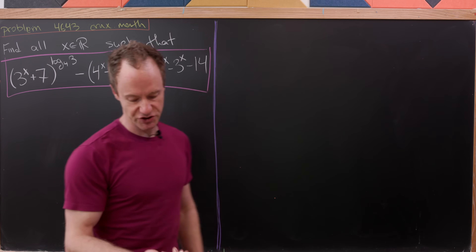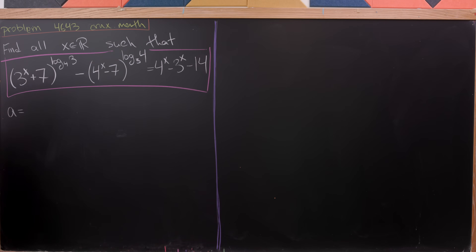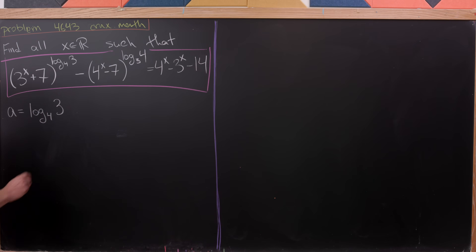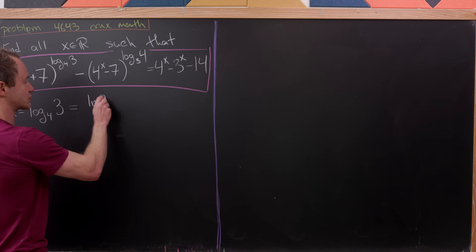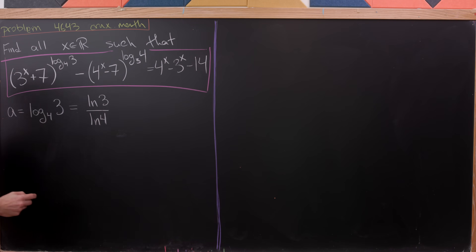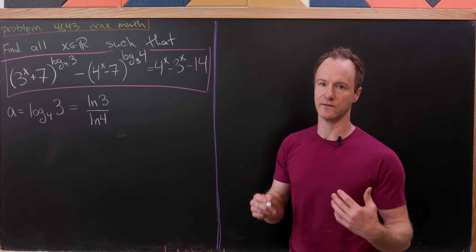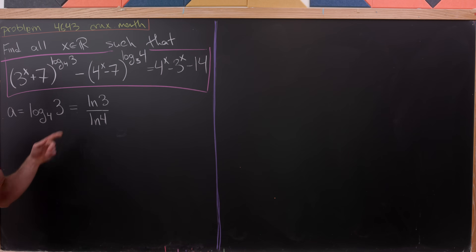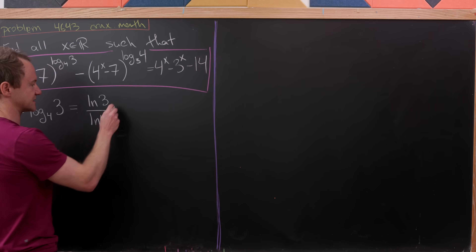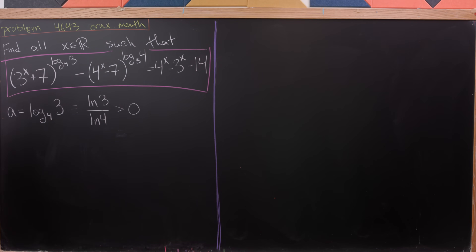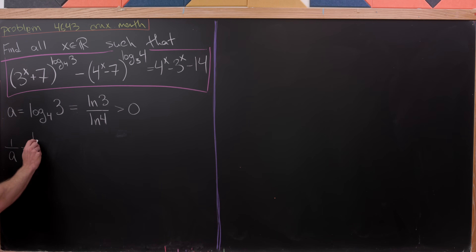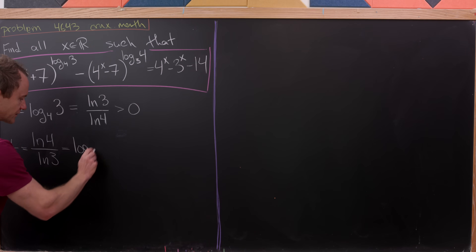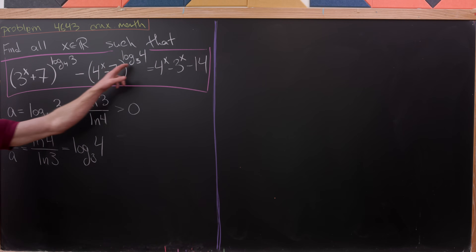Let's start by introducing some notation. Let lowercase a be equal to the log base 4 of 3. By the change of base formula I can write that as the natural log of 3 over the natural log of 4. Now both 3 and 4 are bigger than e, meaning the natural log of 3 is positive and the natural log of 4 is also positive, so a is a positive number. Also, 1 over a equals the natural log of 4 over the natural log of 3, which is the log base 3 of 4. So these exponents in our equation are reciprocals of each other.